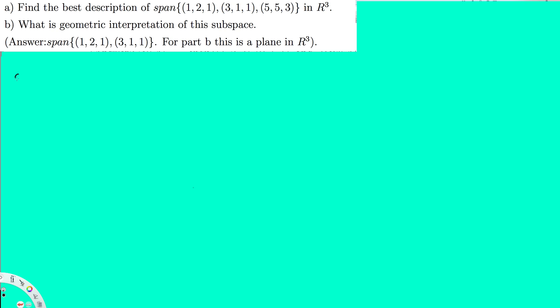So the first row is going to be 1 2 1, the second row is 3 1 1, and the third row is going to be 5 5 3. Now I'm performing Gauss-Jordan elimination — I have to make all the values below the pivot equal to 0.